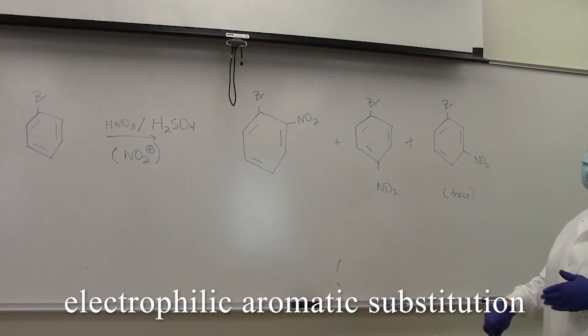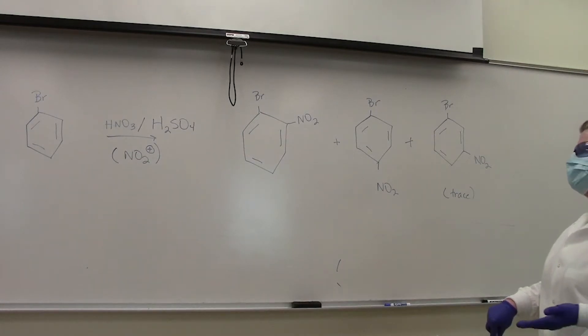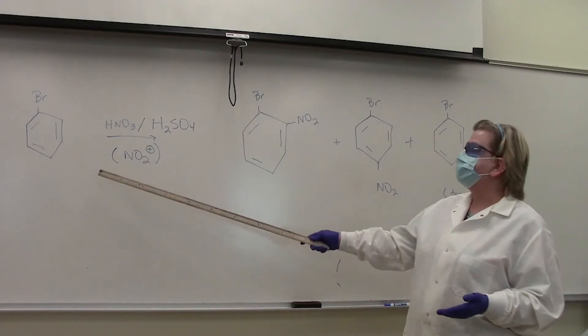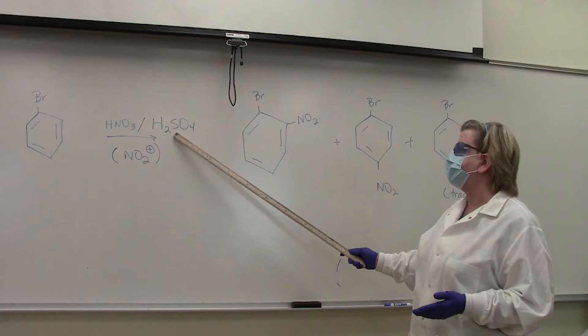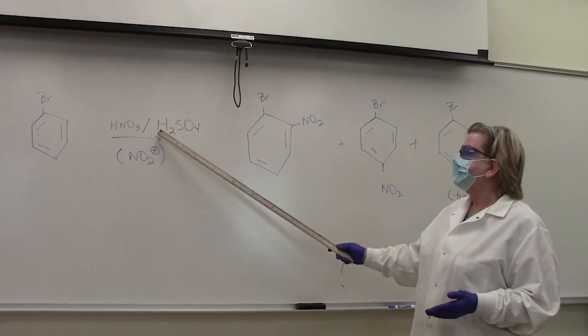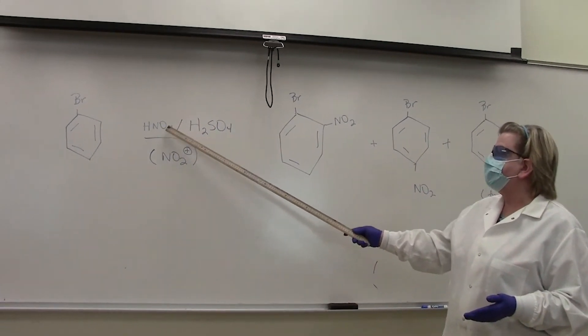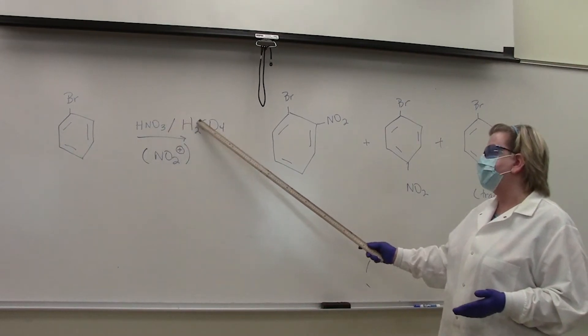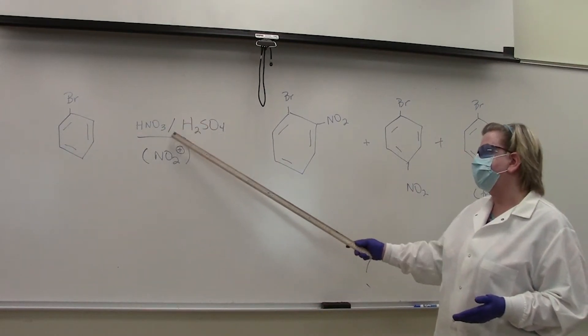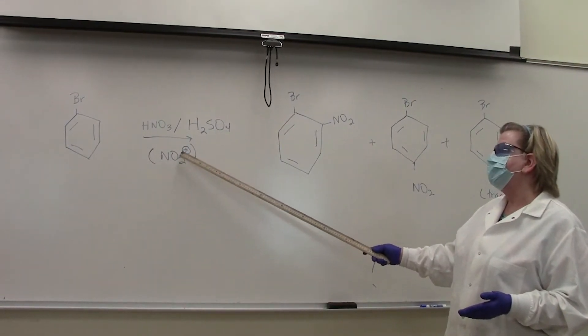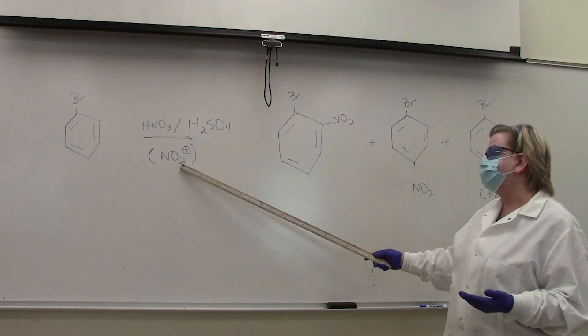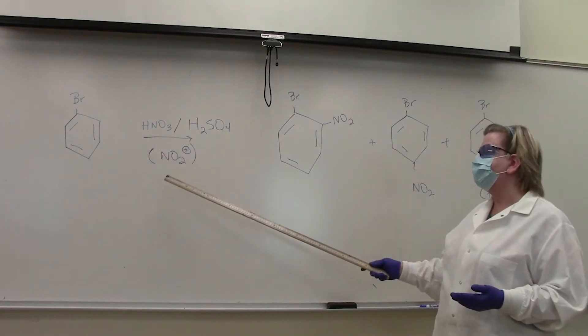The electrophilic aromatic substitution reactions are carried out primarily on benzene and its derivatives. We're going to use bromobenzene and a mixture of nitric acid and sulfuric acid. This is our nitrating mixture. These will react together as an acid and base reaction to generate water and the nitronium ion NO2+. The nitronium ion is the electrophile that will attach onto the benzene ring.